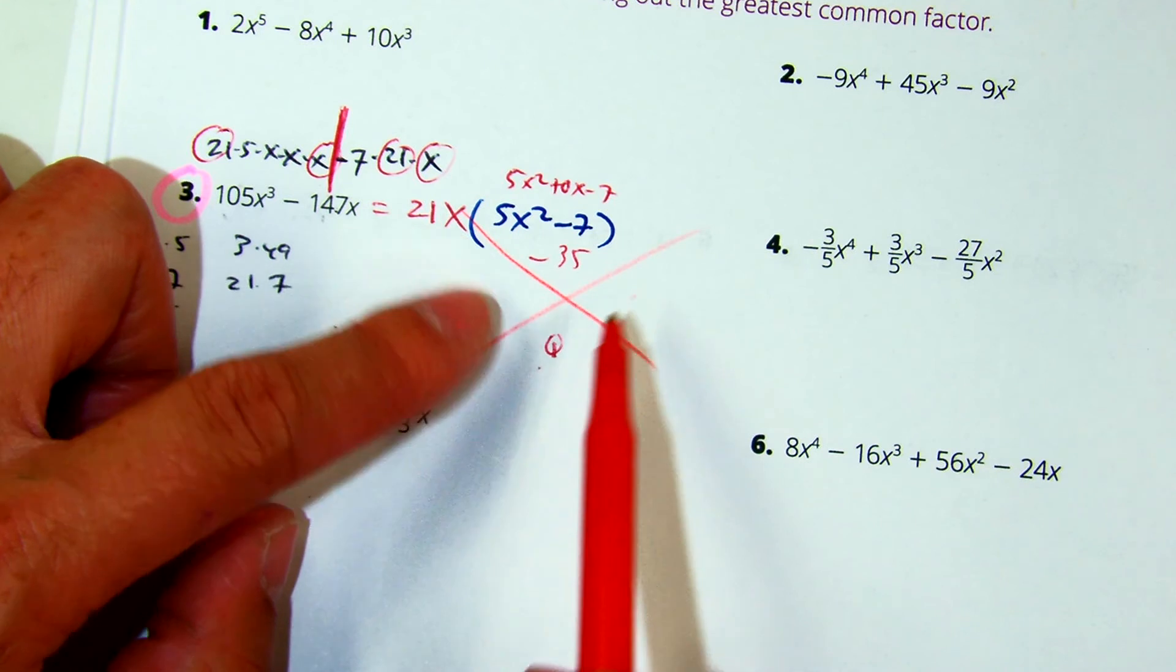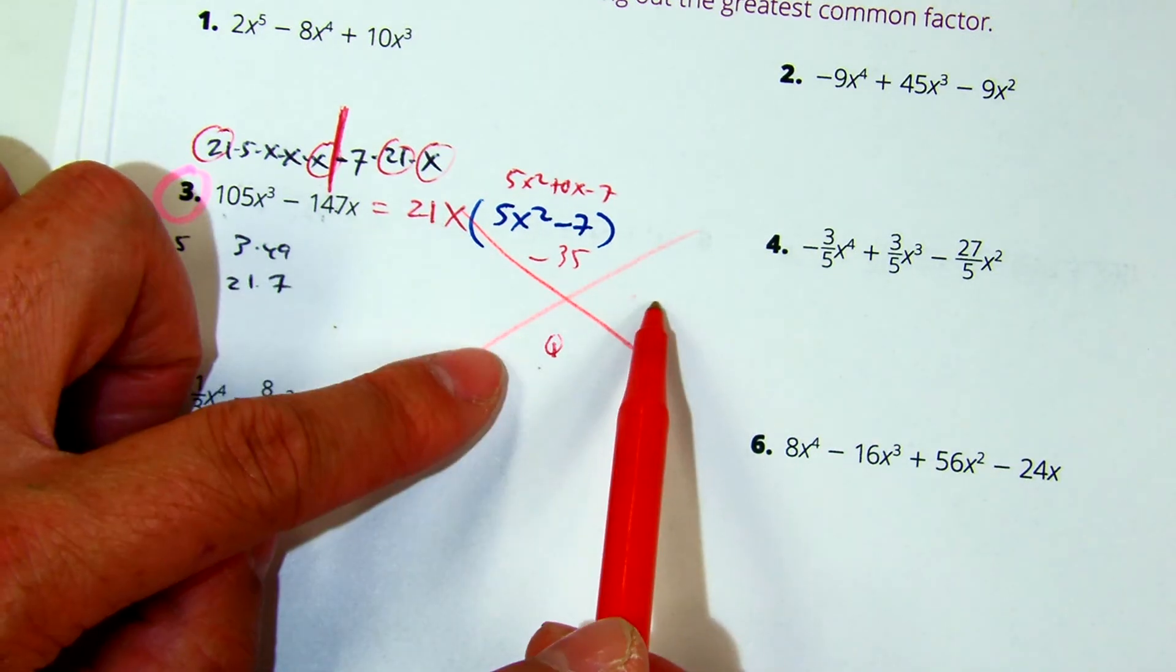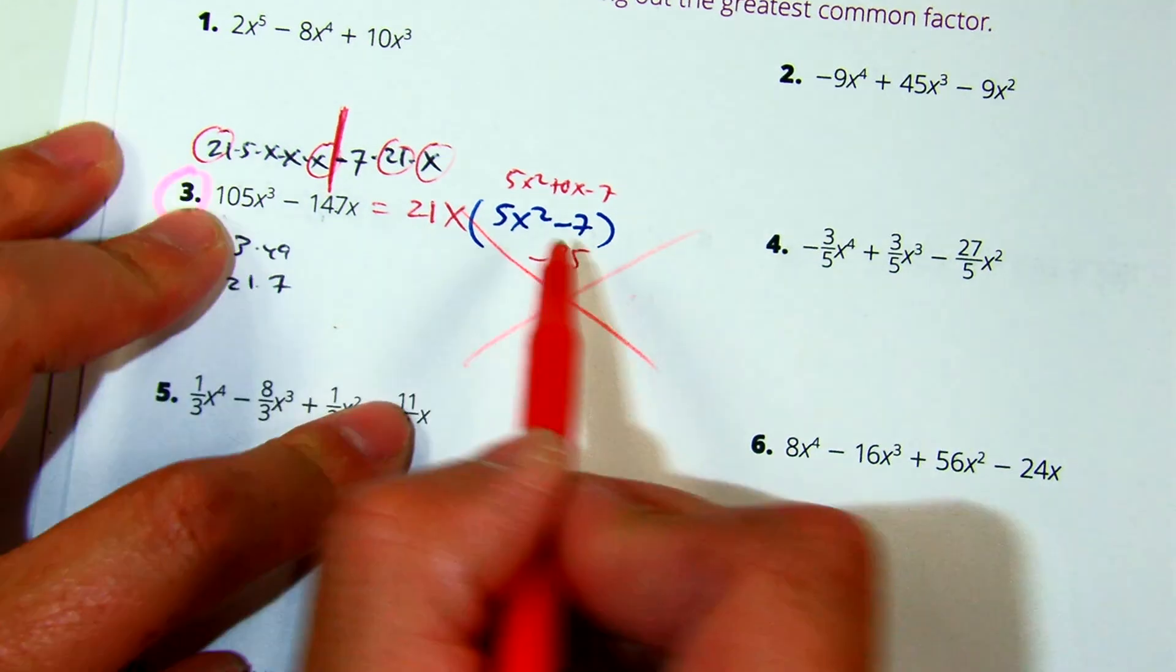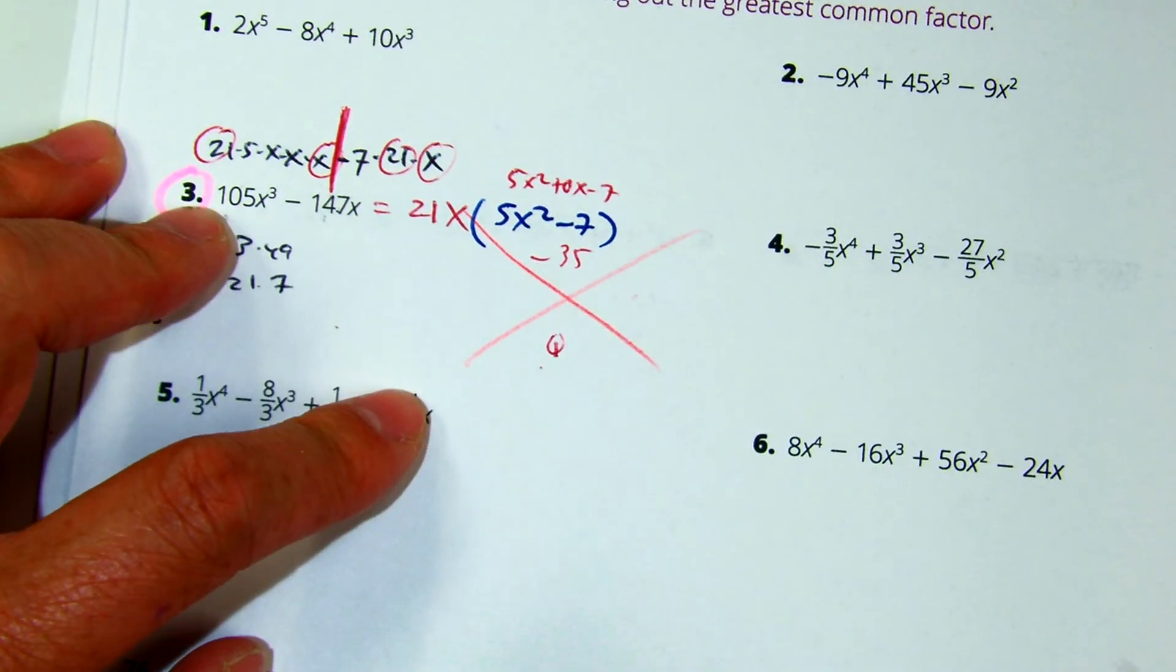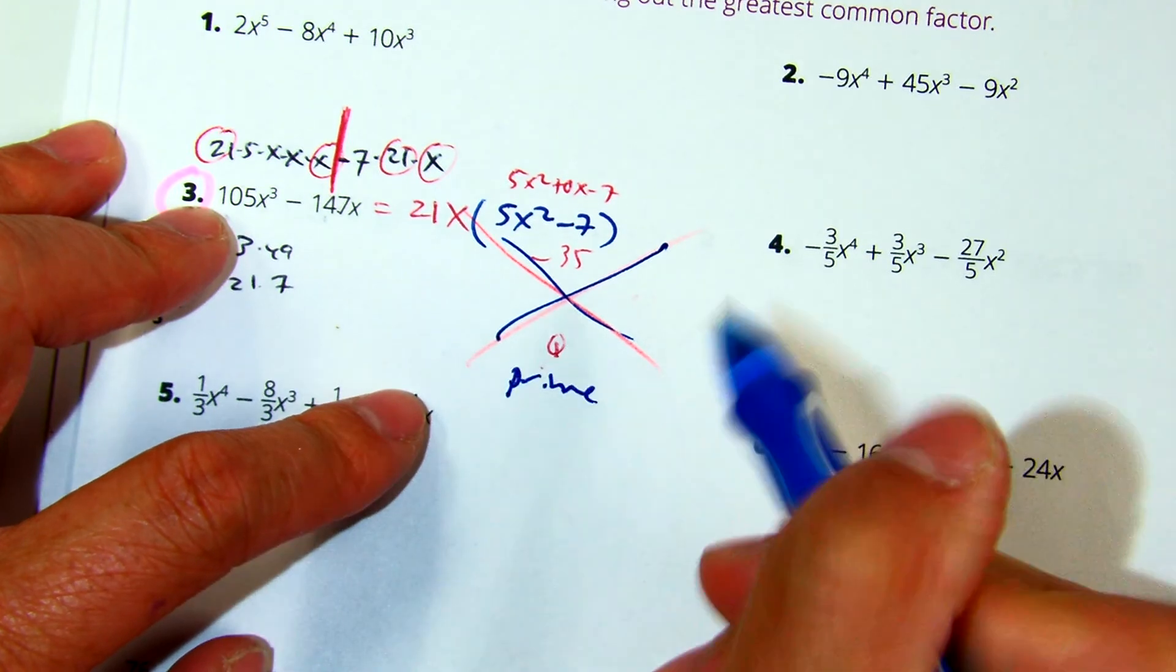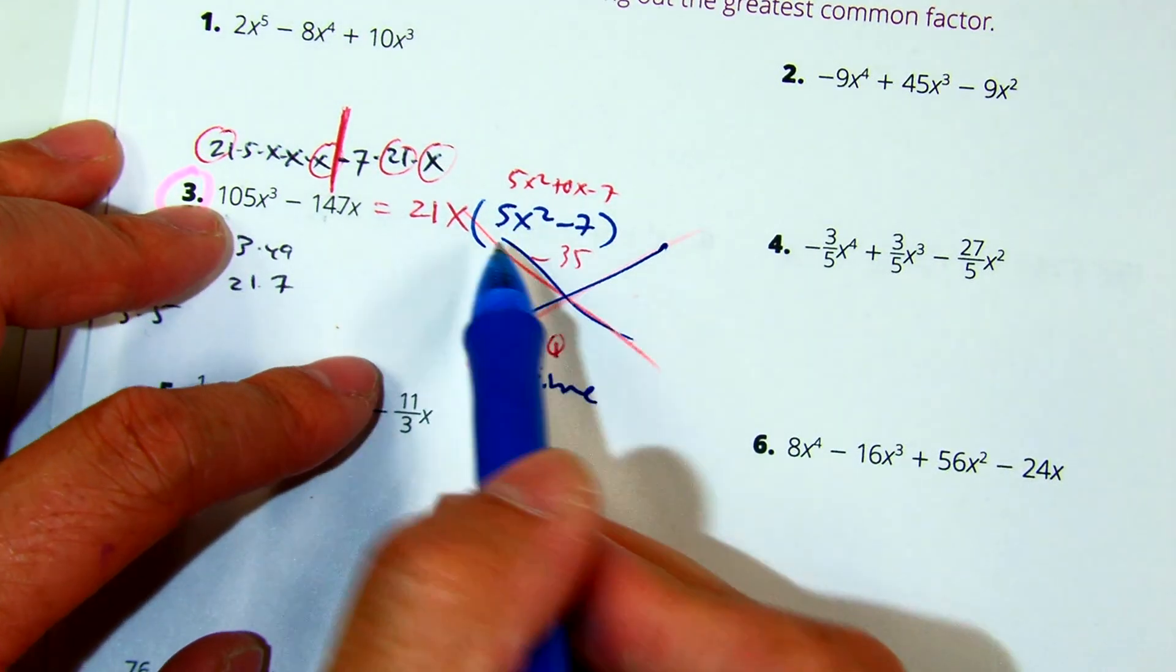Right? Because they have to add to be 0. So a positive 5 and a negative 5, that's 0. But it doesn't multiply to be that number. What does that mean? In blue, this is prime. 5x squared minus 7 means you can't factor anymore.